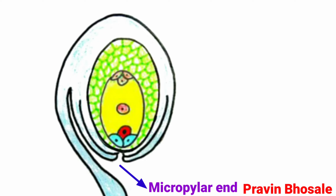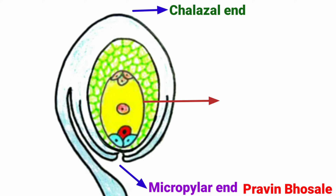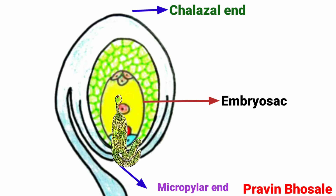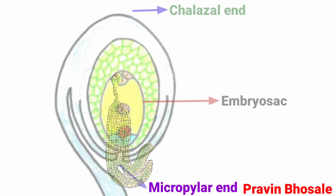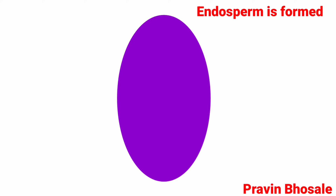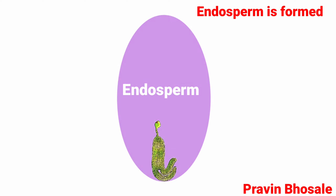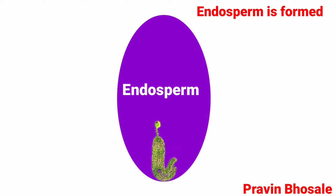This is the micropylar end, this is the chalazal end, and this is the embryo sac. Development of embryo takes place at the micropylar end of the embryo sac. Growth of embryo triggers only after a certain amount of endosperm is formed.